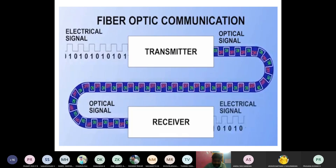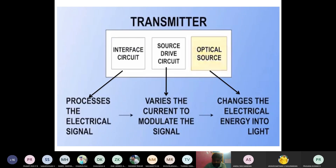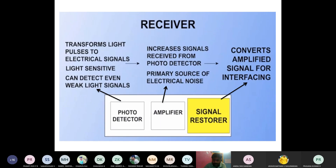From the optical source medium, the information is communicated through the optical fiber in the form of a light wave. So in the transmitter we have three circuits: interface circuit, source drive circuit, and optical source. The electrical signal is converted into the optical signal, and then falls on the optical fiber to go to the receiver end.